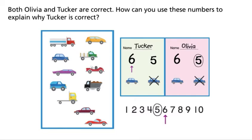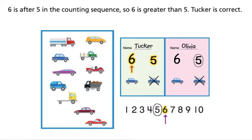How can you use these numbers to explain why Tucker is correct? Six is after five in the counting sequence, so six is greater than five. Tucker is correct.